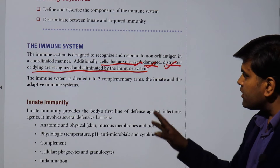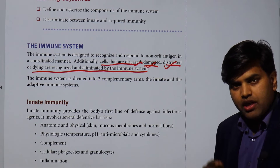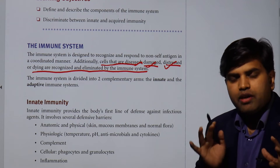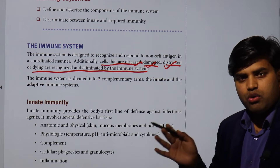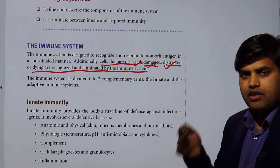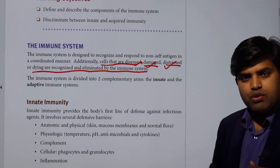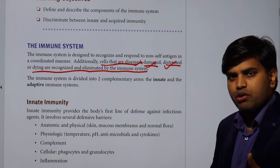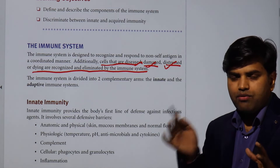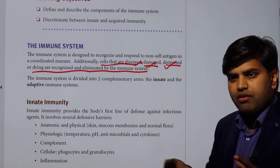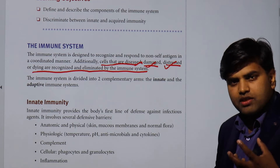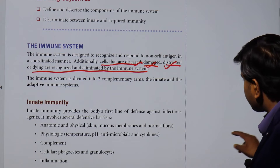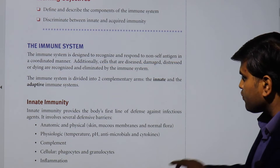The immune system is divided into two complementary arms: the innate arm and the adaptive arm. The innate immunity is the inborn immunity, and the adaptive arm comes into play when innate immunity cannot handle the infection. Then it goes to acquired immunity involving B and T cells. T cells activate B cells, which become plasma cells and form antibodies that help clear infection by activating phagocytic cells, which are part of innate immunity.